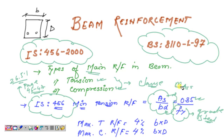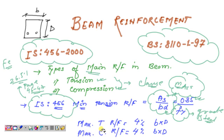In practice, a beam is a flexural member. Concrete is good in compression, so we may or may not require compression reinforcement depending on the design. We have now discussed the minimum tension reinforcement. We will now talk about maximum tension reinforcement and maximum compression reinforcement as per IS 456.